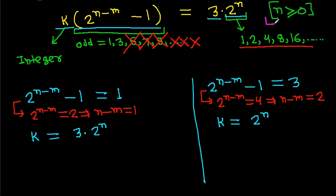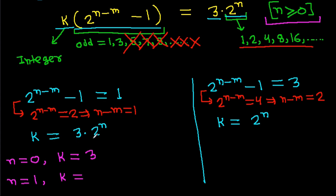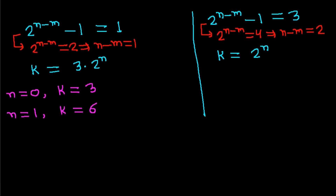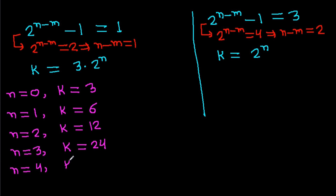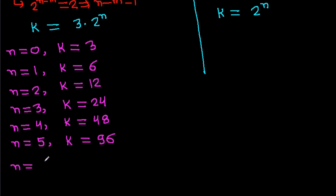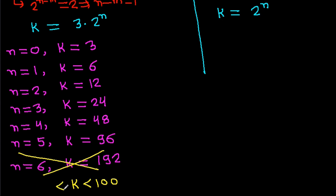For case 1 where n minus m equals 1, k equals 3 times 2^n with n greater than or equal to 0. If n equals 0, k equals 3. If n equals 1, k equals 6. If n equals 2, k equals 12. If n equals 3, k equals 24. If n equals 4, k equals 48. If n equals 5, k equals 96. If n equals 6, k equals 192, which is not possible since k must be less than 100. So this gives 6 valid solutions.